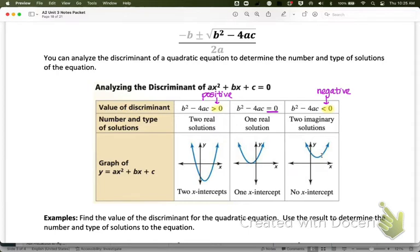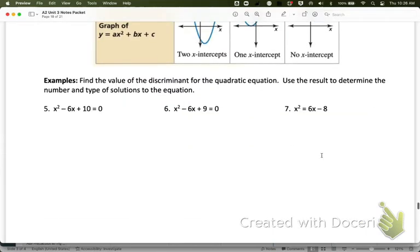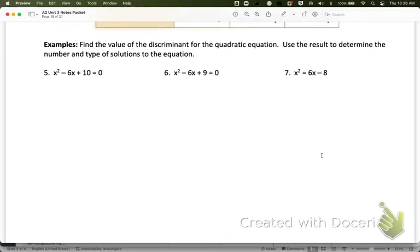We can determine that just by looking at the value of the discriminant. If we look at these examples here, remember that the discriminant is not the whole quadratic formula. The discriminant is just b² - 4ac.